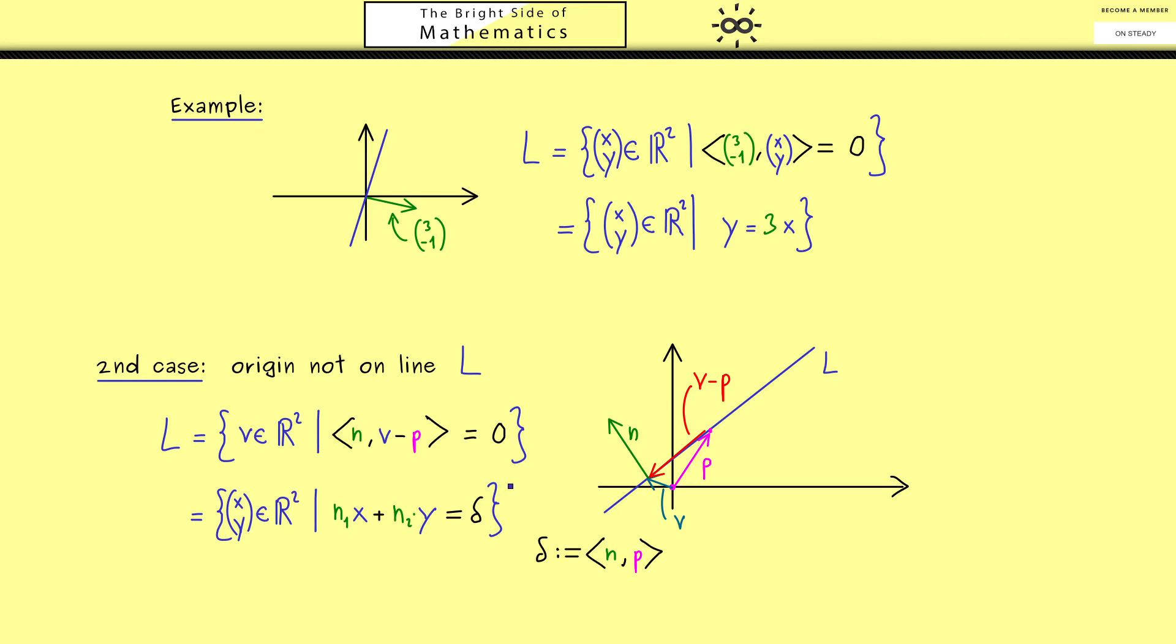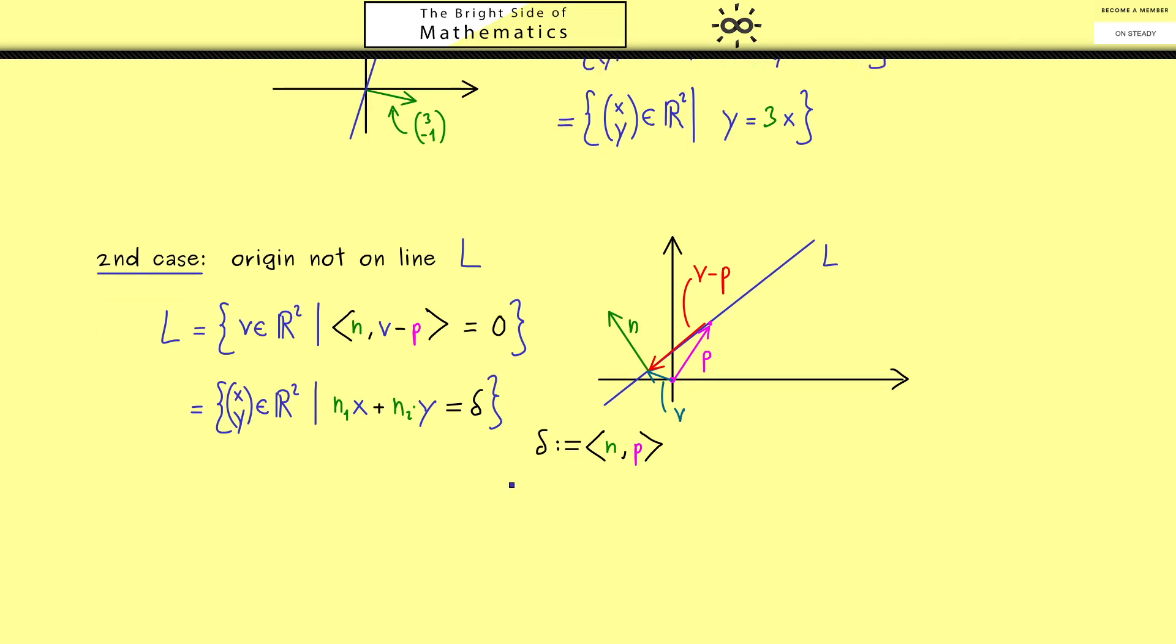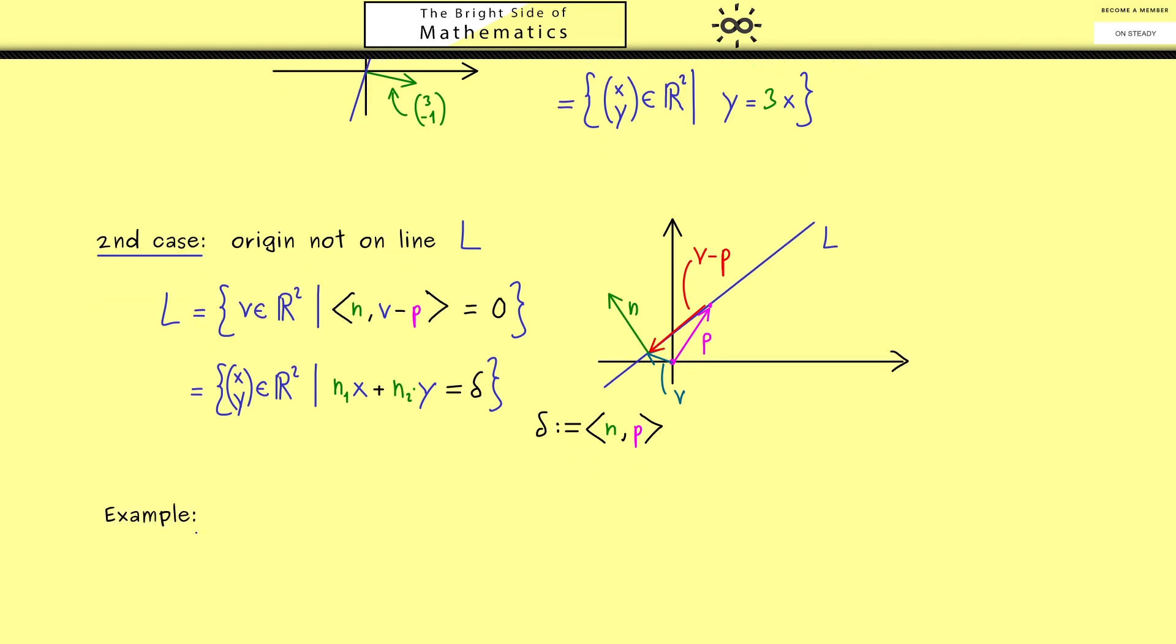And indeed this is not so surprising when we look at an example again. So maybe as before we can build a connection to the graph of a function again. So in a case like this you could say this is simply y is equal to 2x plus 5.